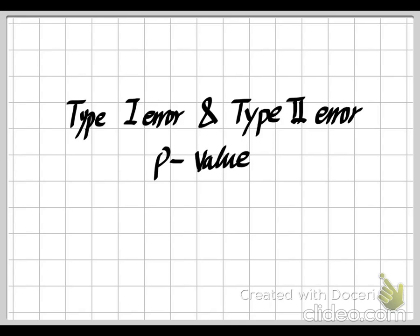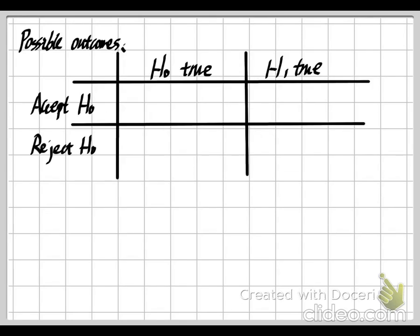In this video, I will talk about two important errors we can make when we do the hypothesis test. And also, there is one important value to help us decide which of our null hypothesis and alternative hypothesis is true. So first, let's talk about the two types of errors we can make when we get the conclusion about our hypothesis testing.